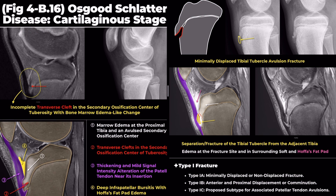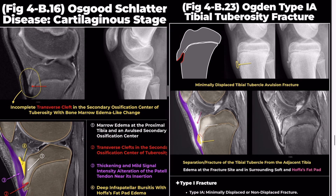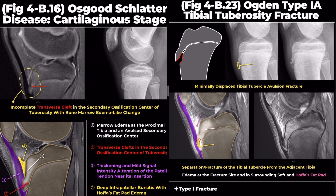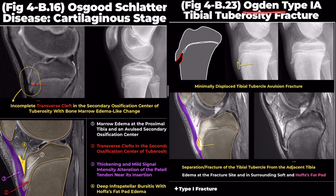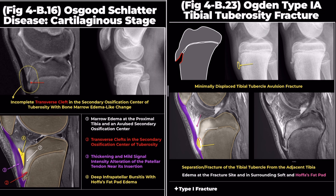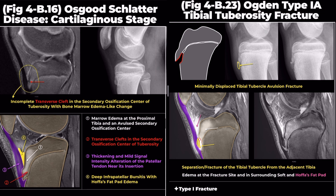The case on the right is a tibial tuberosity fracture. According to the Ogden classification system, it corresponds to type 1A.